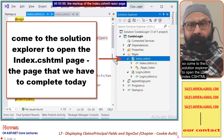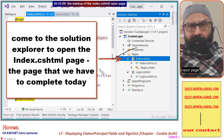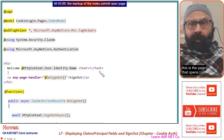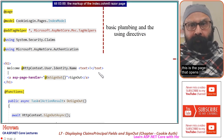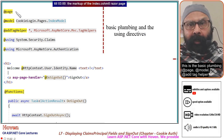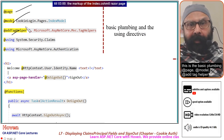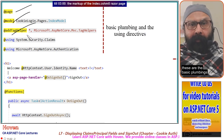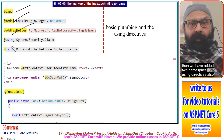Come to the Solution Explorer to open the Index.cshtml Razor page. This is the basic plumbing: add page, add model, add tag helper. These are the basic plumbings for the page.